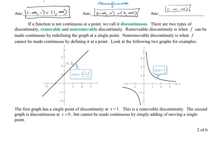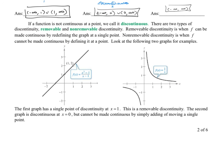If a function is not continuous at a point, we call it discontinuous. There are two types of discontinuity: removable and non-removable. Removable discontinuity is when f can be made continuous by redefining the graph at a single point. Non-removable discontinuity is when f cannot be made continuous by defining it at a point.